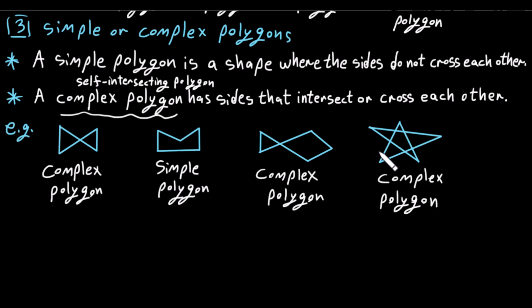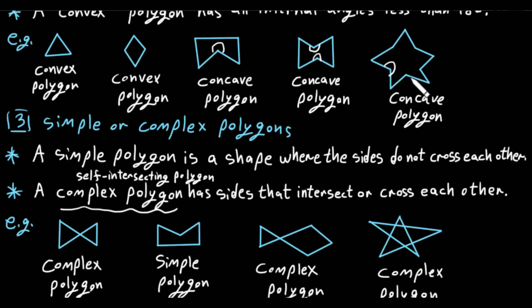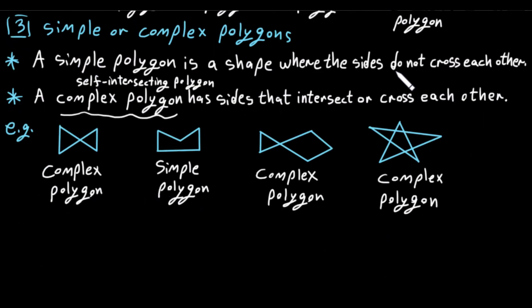A star shape is complex because its sides cross over each other. In contrast, when there are no intersecting sides, it is a simple polygon. You can think of a complex polygon as a shape that contains too many polygons in one shape. That covers the types of polygons.